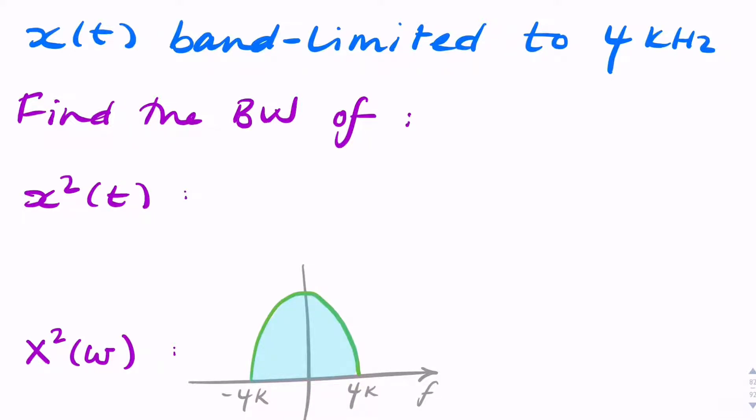And the question is, find the bandwidth, so the frequency domain or the amount of frequency used, for x squared, both in the time domain and the frequency domain. So x²(t) and X²(ω). These are two different signals, and we want the bandwidth.